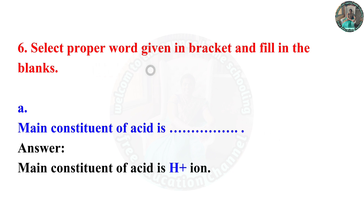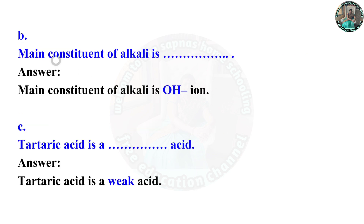Select the proper word from the bracket and fill in the blanks. The main constituent of acid is H+ ion. The main constituent of alkaline is OH- ion. Tartaric acid is a weak acid.